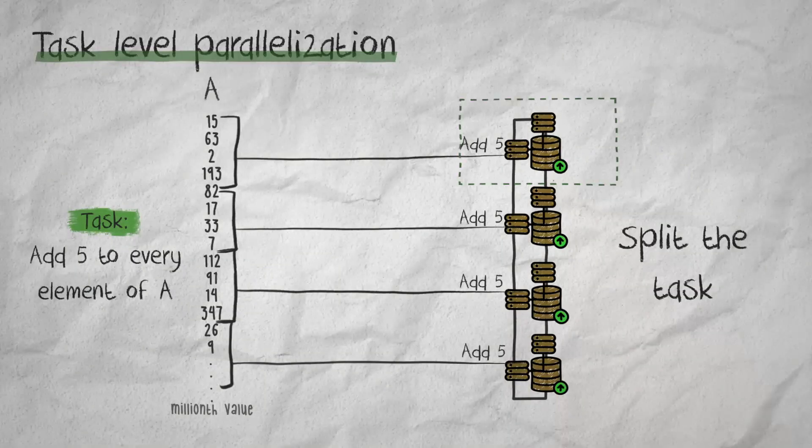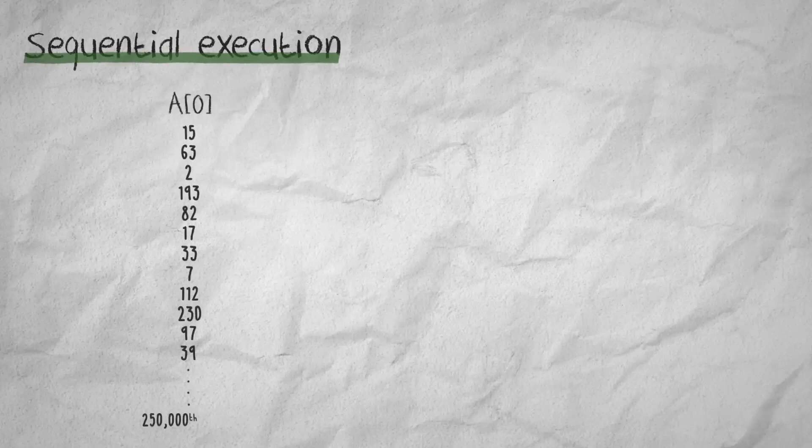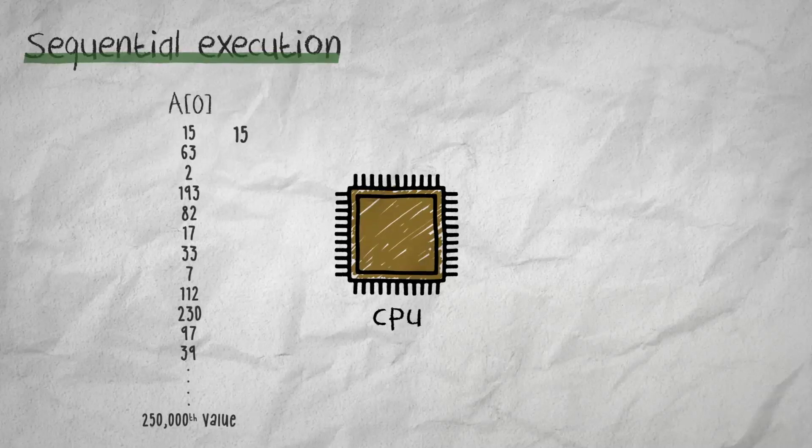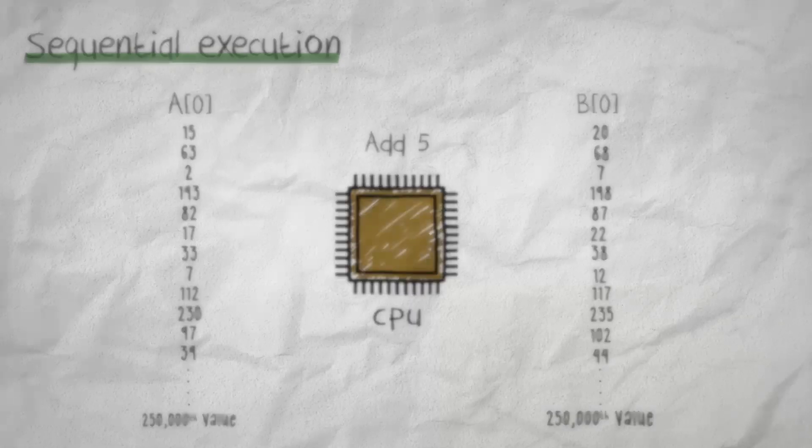Let's look at this more closely. With sequential execution, each element in the column is treated individually. So we start by adding five to the first element 15, and then to 63, 2, 193, and so on. So in the sequential mode, each piece of data is handled one after the other in sequence.